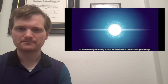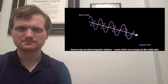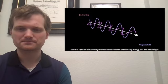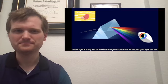To understand gamma ray bursts, we first have to understand gamma rays. Gamma rays are electromagnetic radiation, waves which carry energy, just like visible light. Visible light is a tiny part of the electromagnetic spectrum. It's the part your eyes can see.